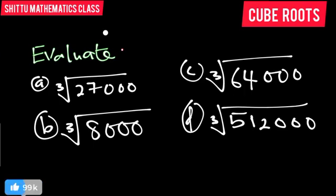The question says we should evaluate the cube root of 27,000, the cube root of 8,000, the cube root of 64,000, and the cube root of 512,000. This is actually the continuation of our previous video on square root, and the understanding of square root we did in our previous video is what we are going to be putting in place here.